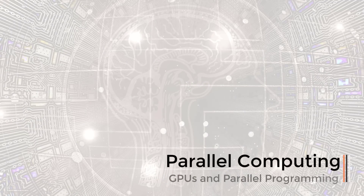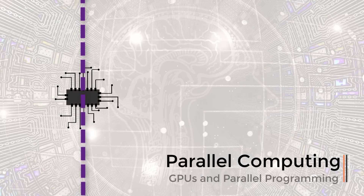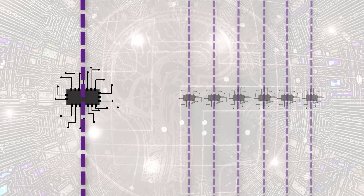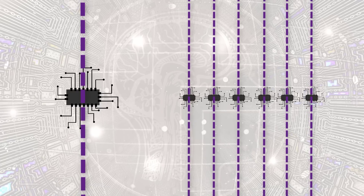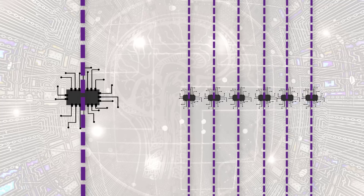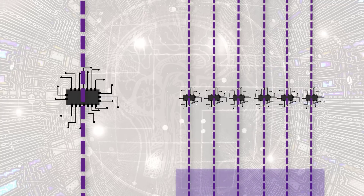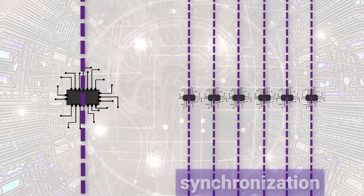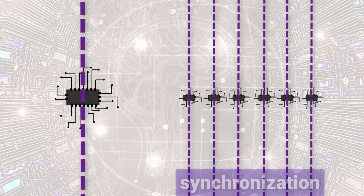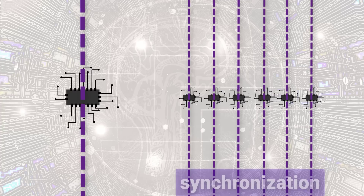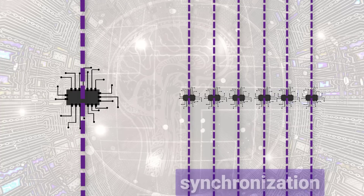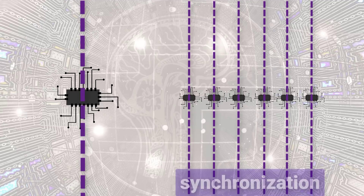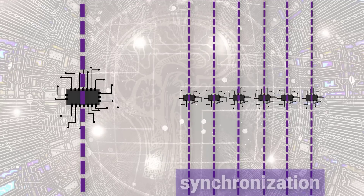Parallel computing is a type of computation whereby a particular computation is broken into independent, smaller computations that can be carried out simultaneously. The resulting computations are then recombined or synchronized to form the result of the original larger computation. The number of tasks that a larger computation can be broken into depends on the number of cores contained on a particular piece of hardware. Cores are the units that actually do the computation within a given processor.